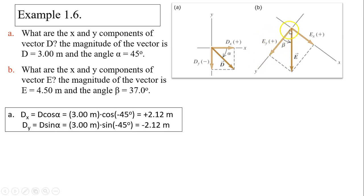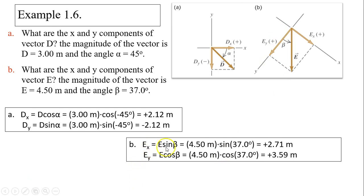We use SOHCAHTOA. EY is adjacent, so adjacent is cosine. EX is opposite, so EX is sine. In this case, EX is sine: 4.5 times sine 37 degrees, giving a positive value. EY is cosine because it's adjacent: 4.5 times cosine 37, giving positive 3.59 meters.